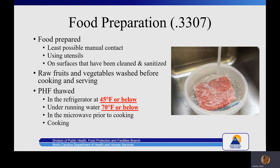Rule 3307, food preparation: foods shall be prepared with the least possible manual contact, with utensils and on surfaces that have been cleaned, rinsed, and sanitized prior to use to prevent cross-contamination — violation of number 10. Note that these rules say least possible manual contact, not no bare-hand contact as in the food code. Food contact surfaces and utensils must be cleaned and sanitized when switching from processing raw to ready-to-eat foods — also violation of number 10. Raw fruits and vegetables shall be thoroughly washed with potable water before being cooked or served — violation of number 3. Improper thawing is also a violation of number 3.